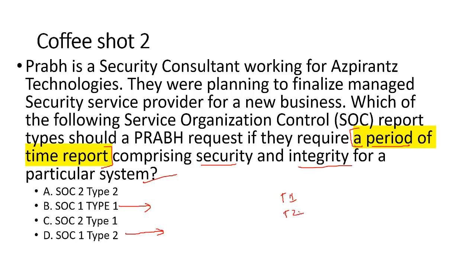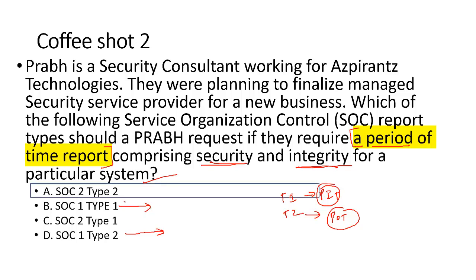A small tip: Type 1 talks about the design of a control, which is point-in-time. SOC 2 Type 2 or SOC 1 Type 2 talk about the effectiveness of a control over a period of time. Wherever the exam mentions 'period of time,' close your eyes and select Type 2. This question talks about period of time with security and integrity — not a financial statement — so the answer is SOC 2 Type 2. If it were about financial statements, we'd go with SOC 1 Type 2.